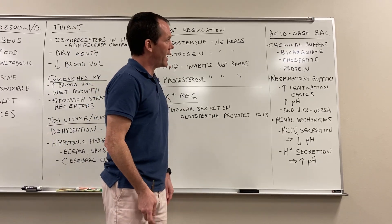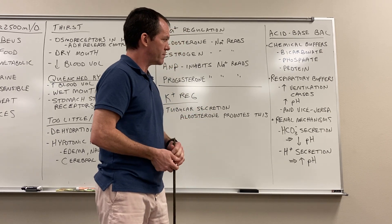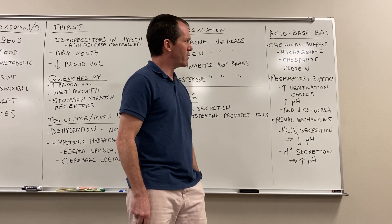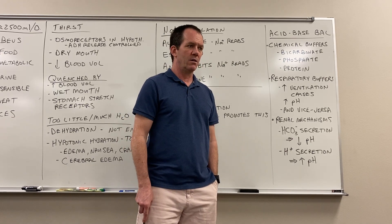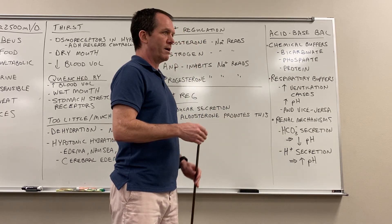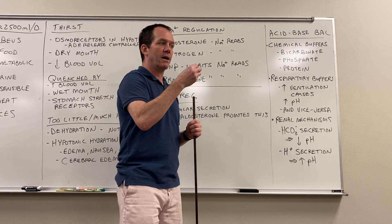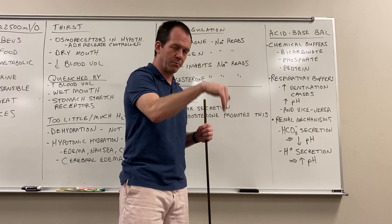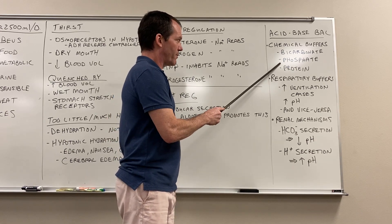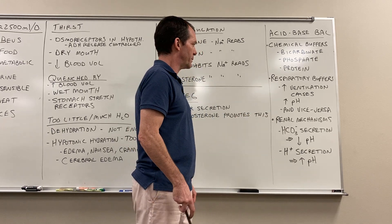Lastly, let's briefly cover acid-base balance. There are three mechanisms that help regulate it. First, chemical buffers — such as the bicarbonate/carbonic acid system, where if blood is too alkaline you liberate hydrogen ions to bring pH back down, and vice versa. A phosphate buffer and protein buffer system work in similar ways, though with different molecules.